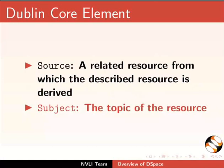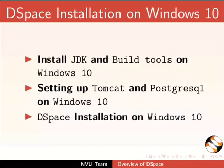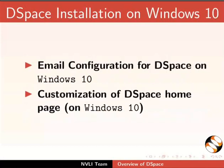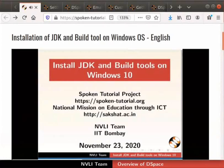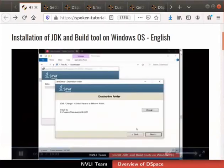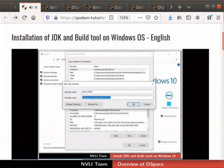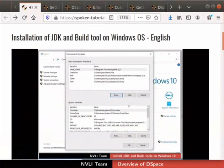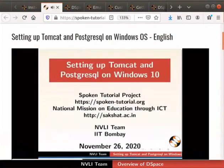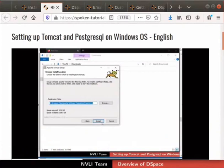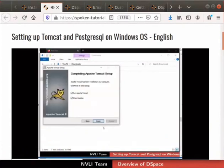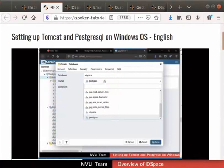Let's briefly go through the various tutorials available in this series. If you are a Windows 10 OS user, use these tutorials to install DSpace and customize it. The initial tutorial is about installing and setting environment variables for JDK, Maven, and Ant on Windows 10 OS. After this, we will install Tomcat and PostgreSQL on Windows 10, and also create a DSpace database.